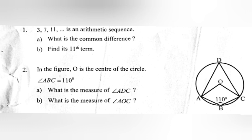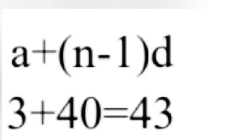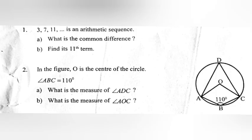Part A: What is the common difference? Part B: Find its 11th term. Answer A: Common difference D is equal to 4. B: A plus (N minus 1) into D is equal to 3 plus 40, equal to 43.